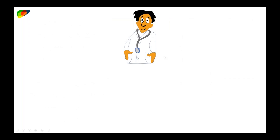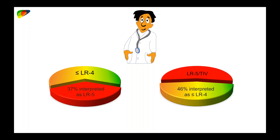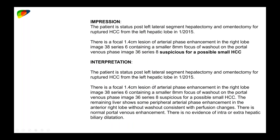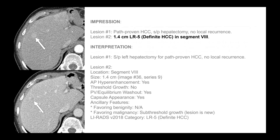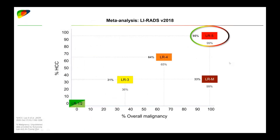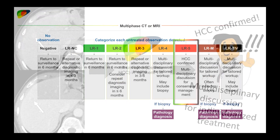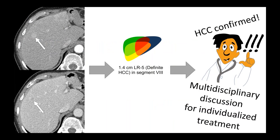Going back to that original report — 'suspicious for possible small HCC' — here is what the images look like. Had the patient come in a year later and we used our LIRADS template, the report would have read: 1.4 centimeter LR5, definite HCC. In this case, the clinician would know what LR5 means, know how LR5 should be treated, HCC is confirmed, and they can proceed with treatment — no confusion.